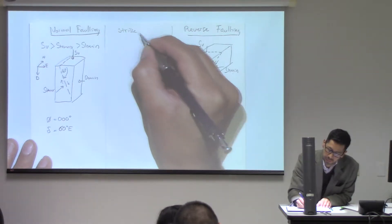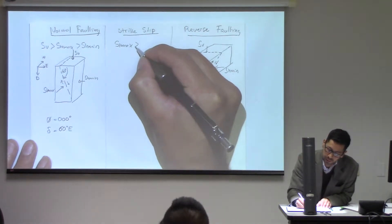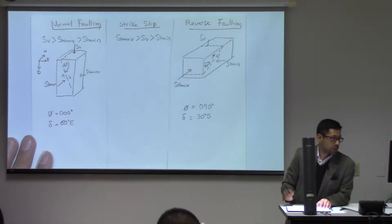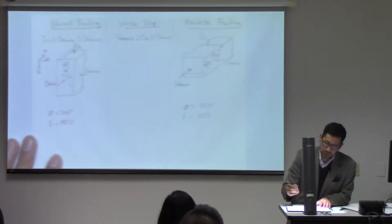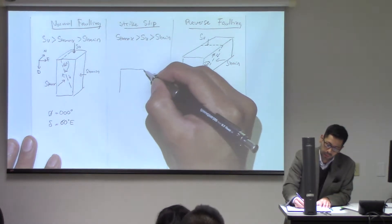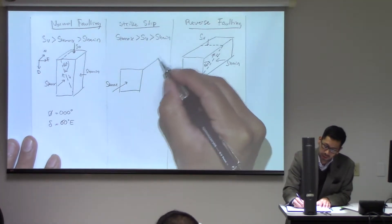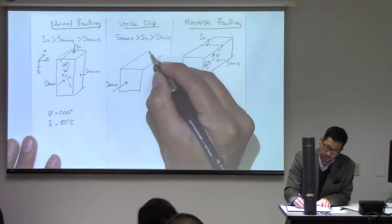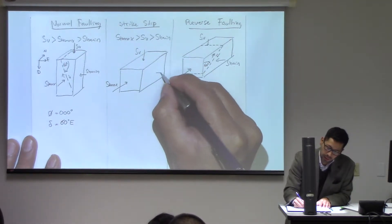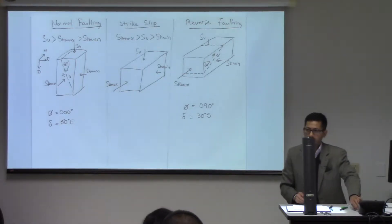In the strike-slip case, the maximum principal stress is horizontal, the intermediate stress is vertical, and the minimum principal stress is also horizontal. If I were to set up a similar orientation to the previous cases, I'm going to draw the same configuration: pushing with SH max, with the intermediate and minimum stresses labeled accordingly. What is going to be the ideal orientation of a fault in that location?